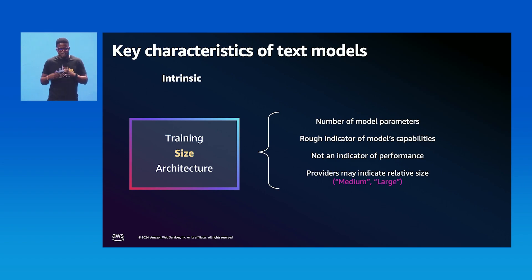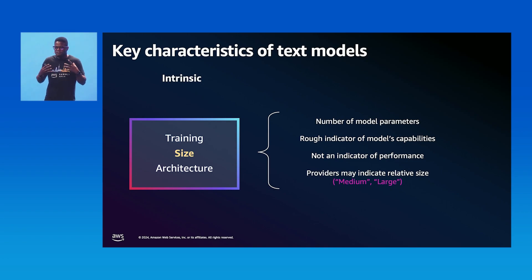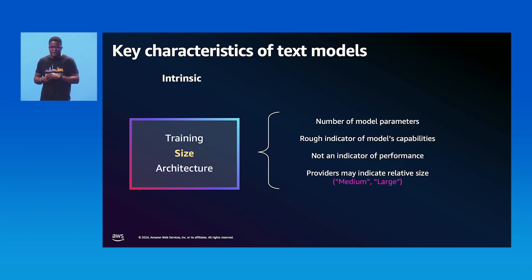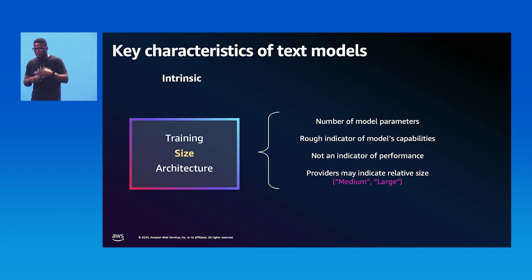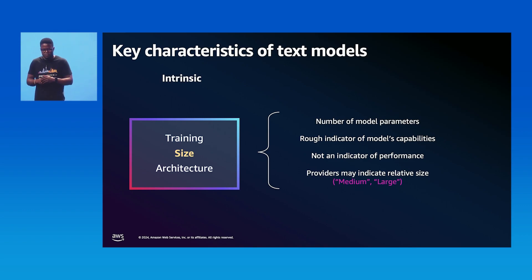The next intrinsic property is the size of the model, usually represented by the number of parameters. The more parameters, the larger the model capacity. Model size gives a rough indication of capabilities but is not a direct measure of performance — recent research shows smaller models can outperform larger ones when trained on higher-quality data with better architectures. Model providers may use relative-size descriptors like Titan Large or Mistral Large. Size matters because larger models require significantly more compute resources to train and deploy.